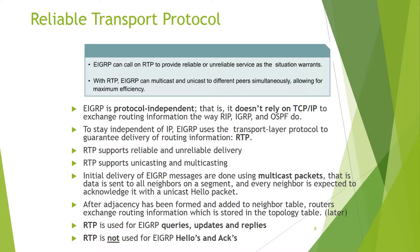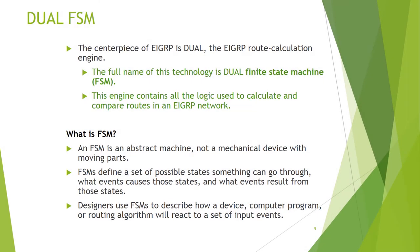After adjacency has been formed and added to the neighbor table, routing information will be stored in the topology table. RTP is used for EIGRP query, update, and reply packets but is not used for EIGRP hello packets. RTP uses a DUAL FSM. The key piece of EIGRP is DUAL — the Diffusing Update Algorithm — which is a finite state machine containing all the logic to calculate and compare routes in an EIGRP network.